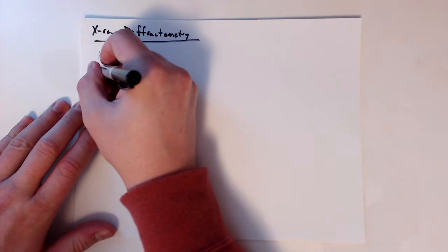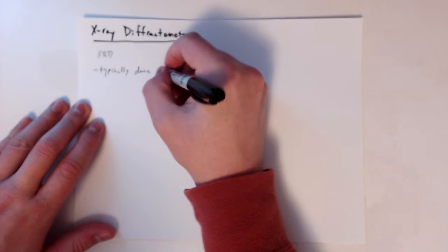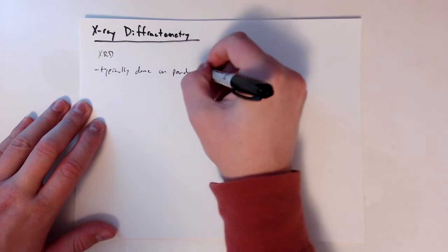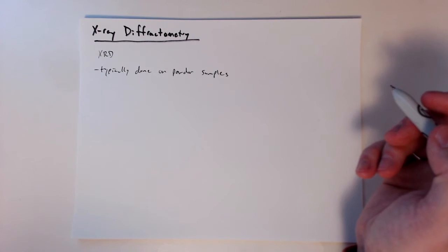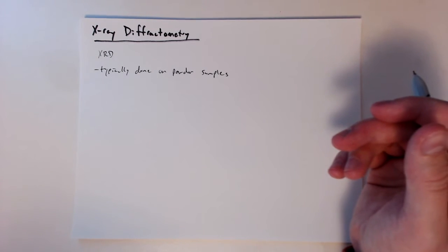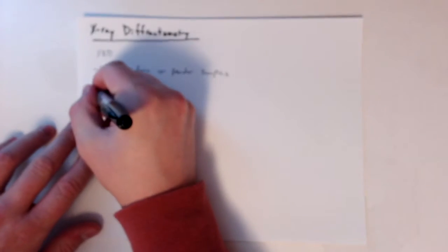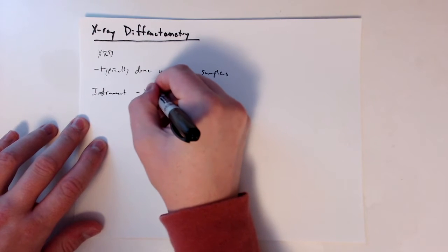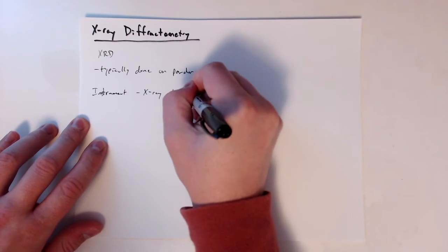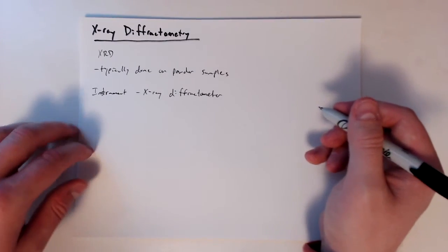And so it's typically done on powder samples, but we can also do other examples as well. So polycrystalline aggregates, we can do bulk materials and so forth, but powders are very common. And so the instrument is called an x-ray diffractometer. So pretty simple in terms of its name, x-ray diffractometer.